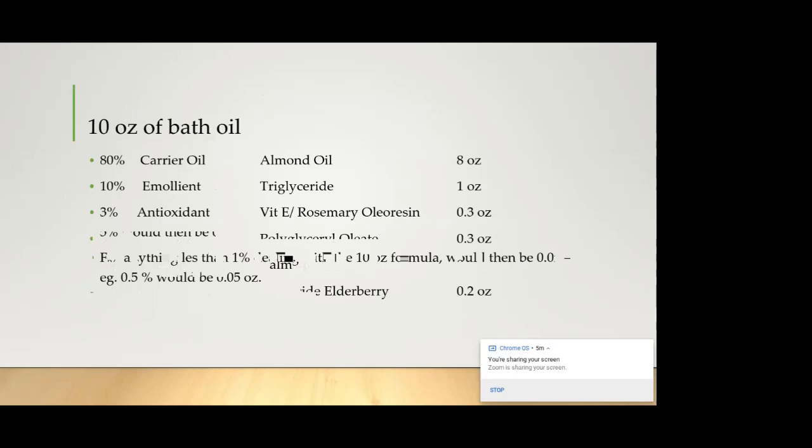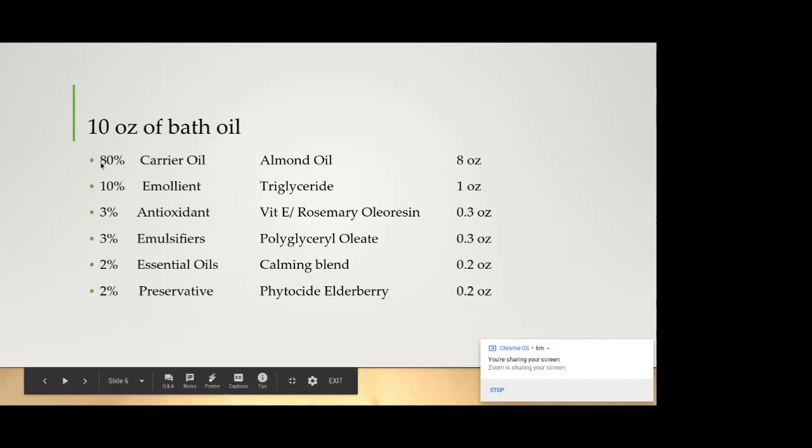So using the example of the bath oil template that we saw before, it's asking you for a percentage of each of these categories: carrier oil, emollient, antioxidants, emulsifiers, essential oils and preservatives. And it gives you a range within each category that you can use. So for the carrier oil it suggested maybe 65 to 80%, and so I chose 80%. I figure if it's a bath oil it might as well be mostly oil.